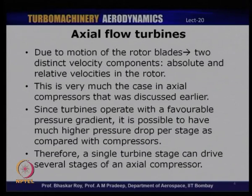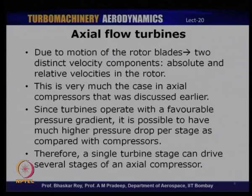We have seen in compressors that due to the motion of rotor blades, you have two distinct types of velocities: the absolute velocity component and the relative velocity component. This was also discussed in detail for compressors. In a turbine analysis done by analyzing the velocity triangle, you will see these two distinct components, which are very similar to what was discussed for compressors. So if you have understood velocity triangle construction for an axial compressor, it is pretty much the same for a turbine as well.